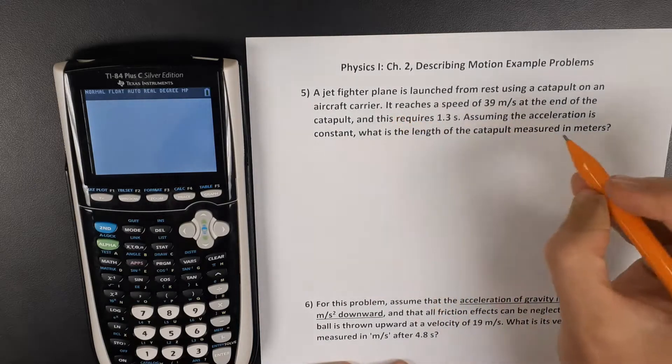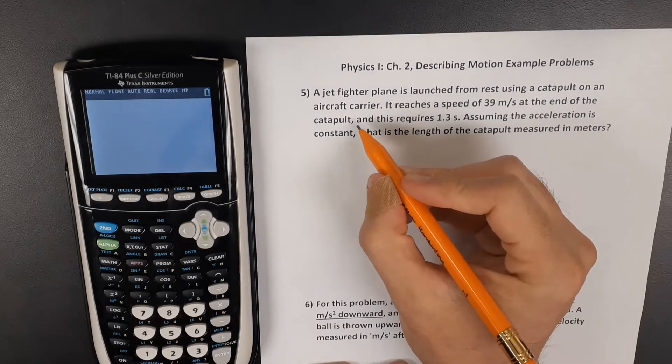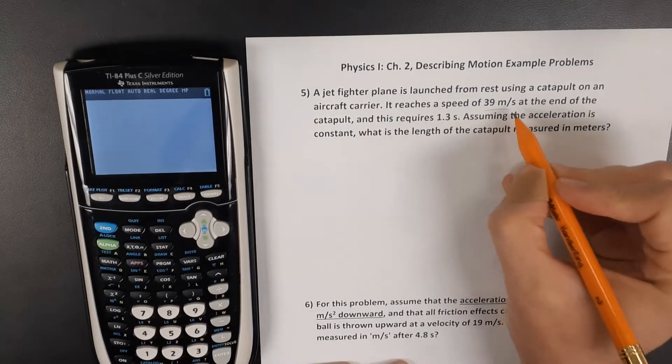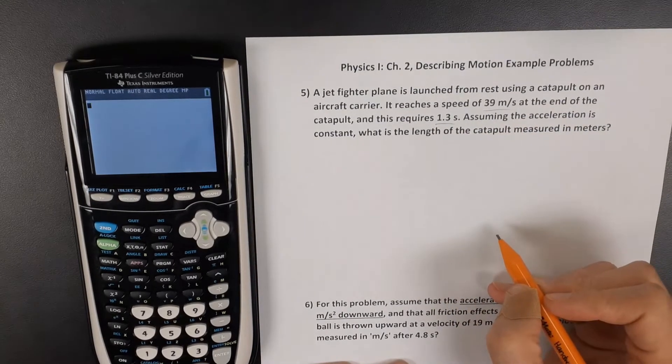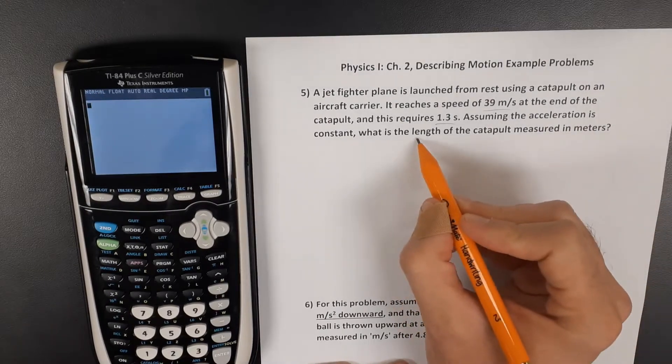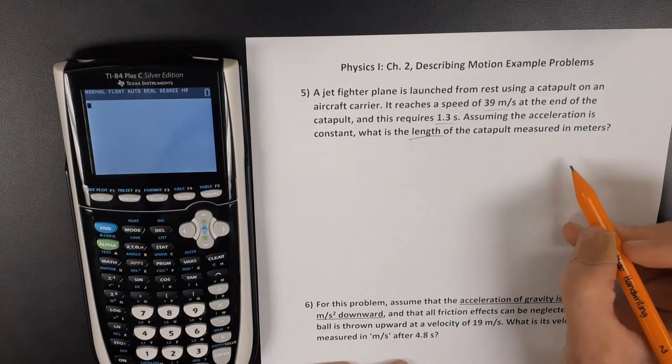In this problem, a plane is being launched off an aircraft carrier and it reaches a speed of 39 meters per second in 1.3 seconds. The acceleration is constant. What is the length of the catapult?